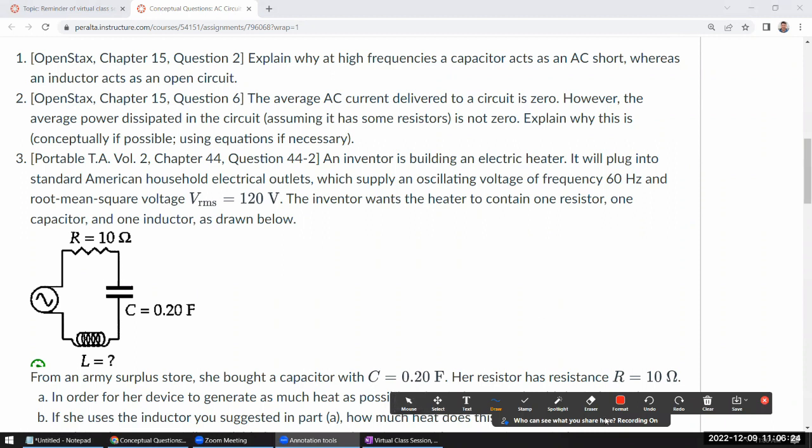We've told you that the complex impedance of a capacitor is 1 over I omega C, and the complex impedance of an inductor is I omega L. The important quantity here is omega, angular frequency of your driving voltage or driving current. With the capacitors, omega being in the denominator means this value becomes smaller the larger the frequencies.